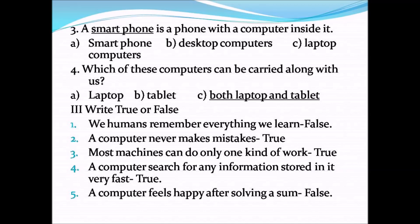True or false: We humans remember everything we learn — False. A computer never makes mistakes — True. Most machines can do only one kind of work — True. A computer can search for any information stored in it very fast — True. A computer feels happy after solving a sum — False.